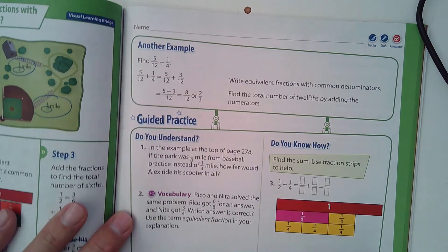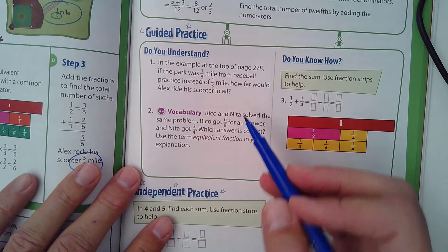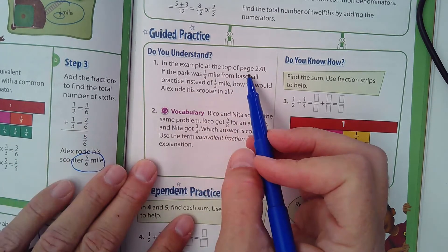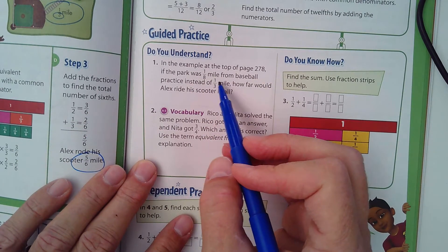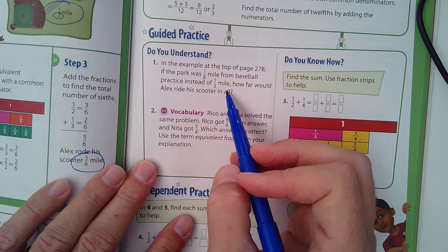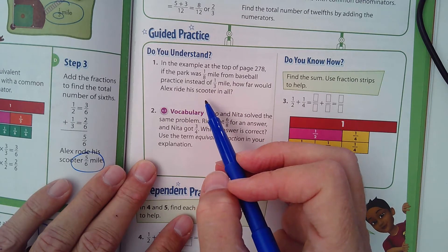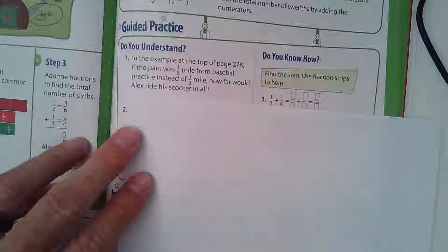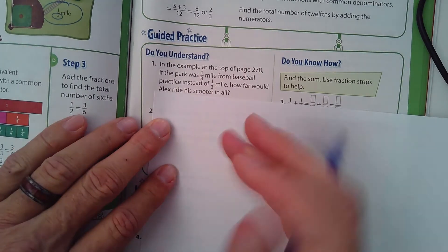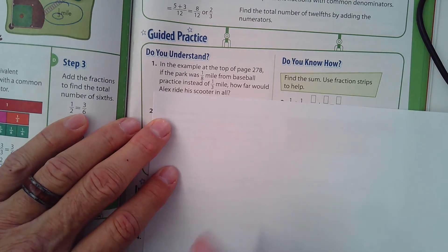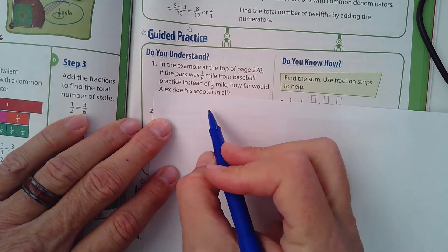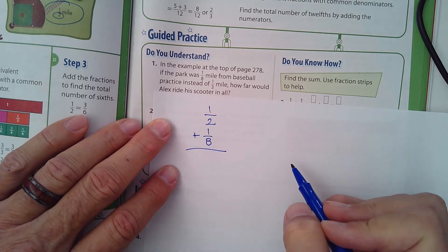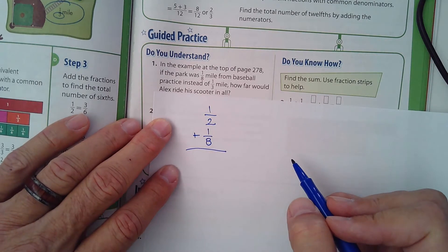Let's look at this example here at the top of page 278. If the park was one-eighth of a mile from the baseball practice instead of a third, how far would Alex ride his scooter in all? So I can get myself a piece of scratch paper here. Instead of a third of a mile, it'd be an eighth, so it's going to be one-half plus one-eighth.